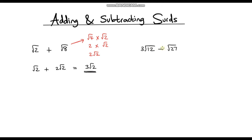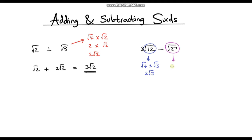Let's go through one more example: 3 root 12 minus root 27. The first thing to do is simplify our surds. Root 12 is the same as root 4 multiplied by root 3, and the square root of 4 is 2, so this is just 2 root 3. Now simplifying root 27 — that's the same as root 9 times root 3, and the square root of 9 is 3, so this is 3 root 3.